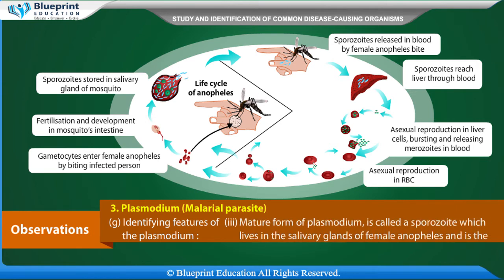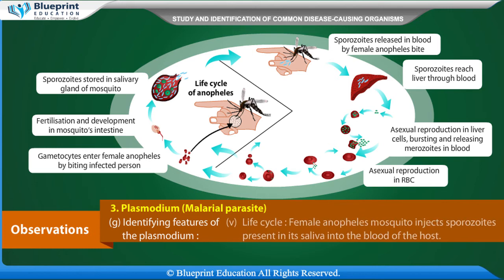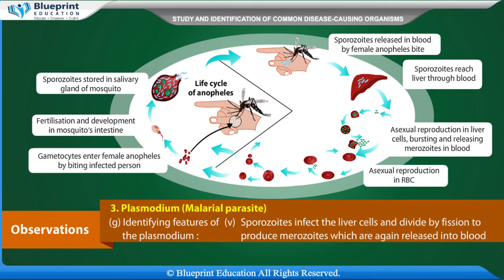The mature form of Plasmodium is called a sporozoite, which lives in the salivary glands of the female Anopheles and is the infective stage. The sporozoite is spindle-shaped and nucleate. The female Anopheles mosquito injects sporozoites present in its saliva into the blood of the host, where they infect liver cells.